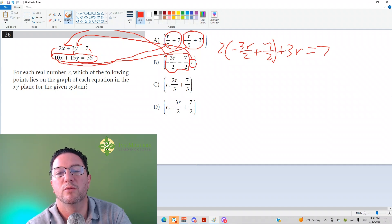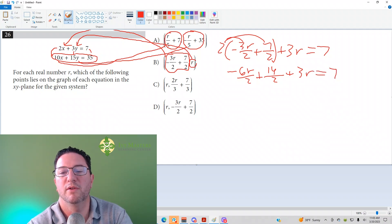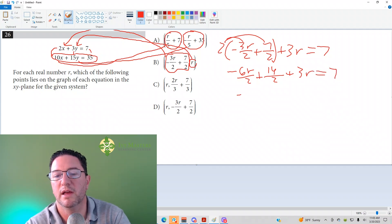So now, what do I get when I distribute here and here? I get negative 6R over 2 plus 14 over 2 plus 3R equals 7. And I'm writing it out this time. I didn't last time. Negative 3R plus 7 plus 3R equals 7. If I combine like terms, negative 3R plus 3R will give you 0. What I wind up with is 7 equals 7.